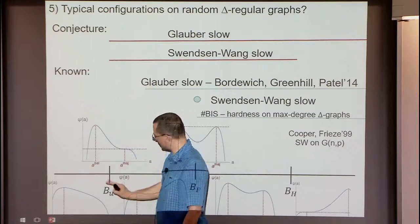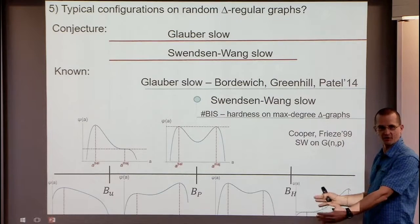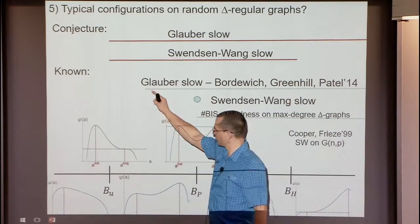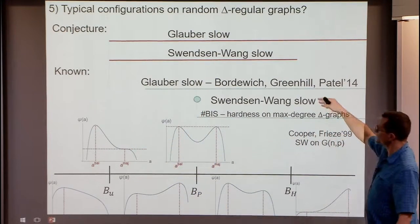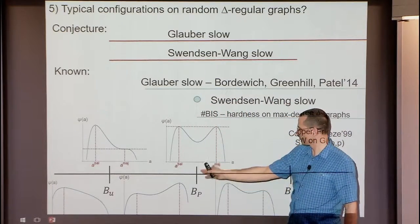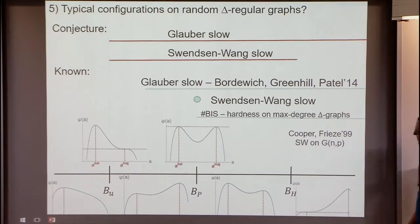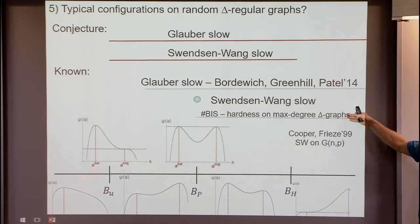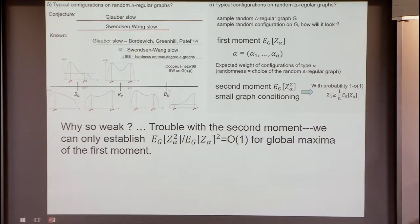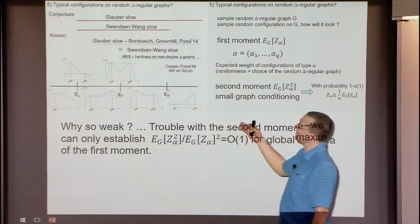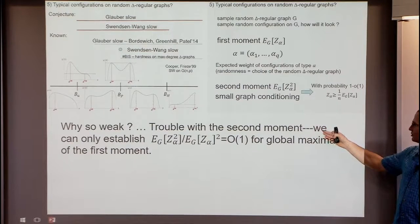You would like to infer from these pictures that Glauber dynamics is slow and that Swendsen-Wang is slow. Unfortunately we are unable to do that fully. The conjecture is that the same things happen on the random delta-regular graph as on the mean field model. What is known: Glauber dynamics is slow, but we cannot go all the way up to the uniqueness point. Swendsen-Wang is slow exactly at the point where the uniform and the one-color-dominating configurations are about balanced. We also know something about hardness of computing the partition function for graphs of maximum degree delta. The main difficulty is the second moment: we are unable to prove the second moment in the intermediate regime.